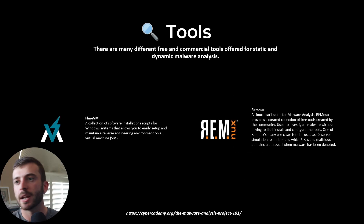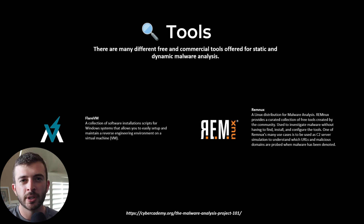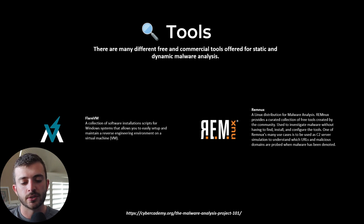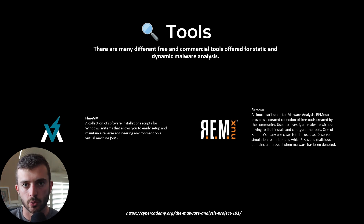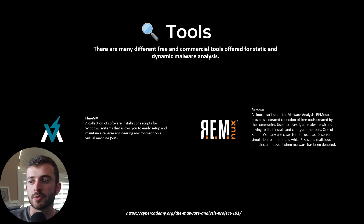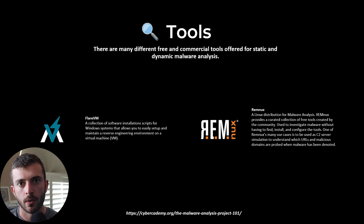There are many tools out there — some free, some commercial — and in this course I'll be showing two basic tools. Number one is FlareVM, which is a collection of software installation scripts that downloads a huge archive of malware analysis tools. Number two is Remnux, a free Linux distribution. One key use case for Remnux is to function as a C2 server, so that when malware reaches out to a host, it will simulate that server for the malware.